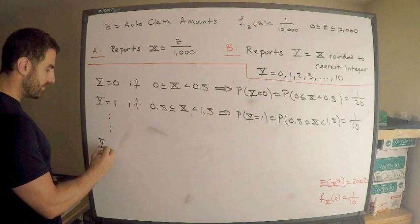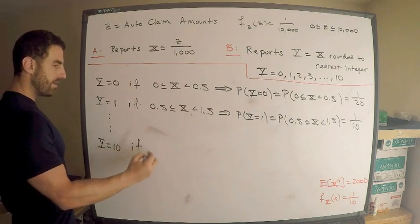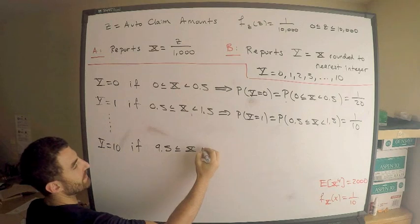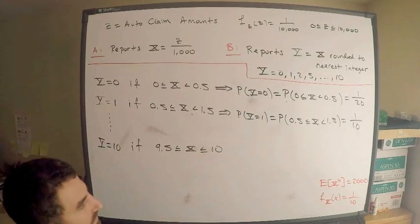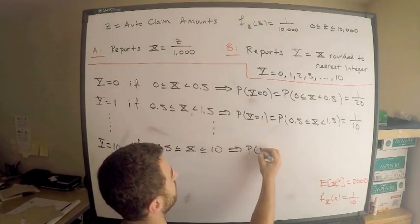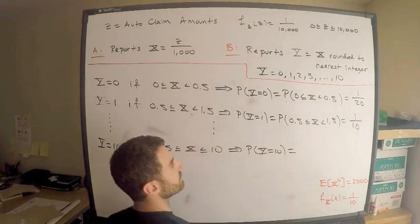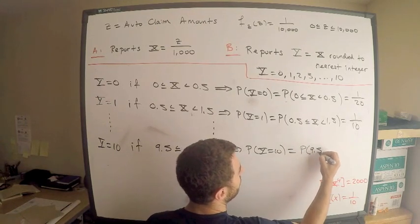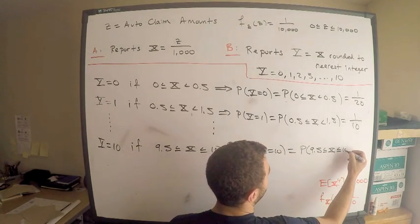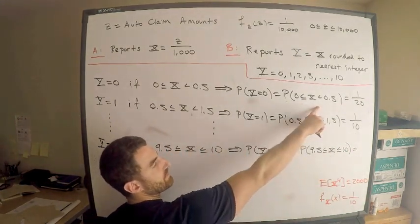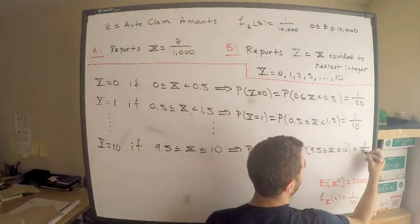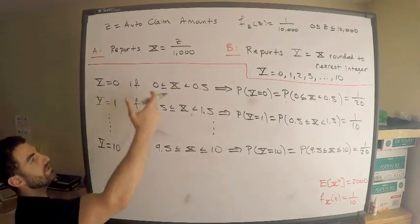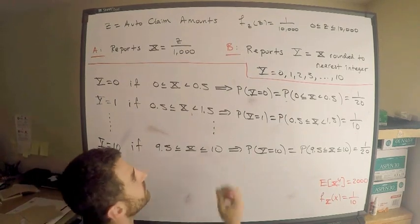Nothing interesting happens until Y = 10. Y equals 10 when 9.5 ≤ X ≤ 10. The probability that Y = 10 equals the probability that X is between 9.5 and 10, which has interval length 0.5 — just like when Y = 0 — so this is 1/10 times 1/2 = 1/20. We have the full probability mass function.